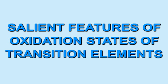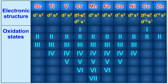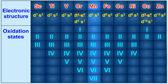Let us know the salient features of oxidation states of transition elements. The elements which exhibit the maximum number of oxidation states occur either in or near the middle of the series. For example, in the first transition series, manganese exhibits the maximum number of oxidation states.